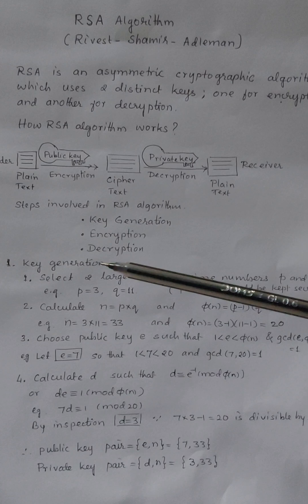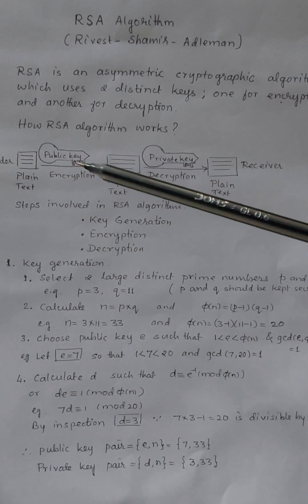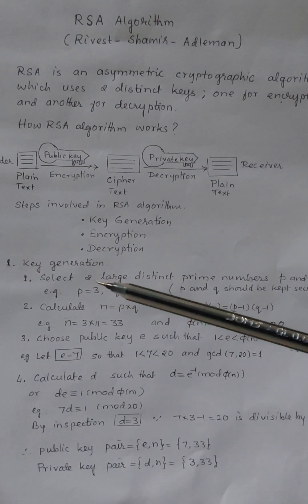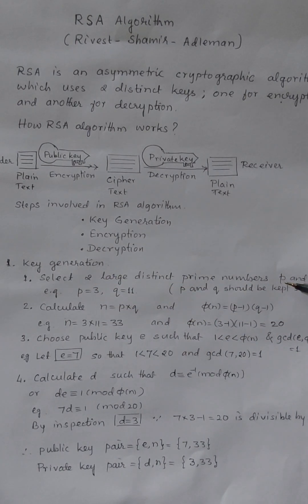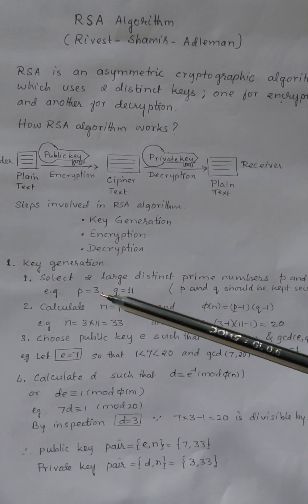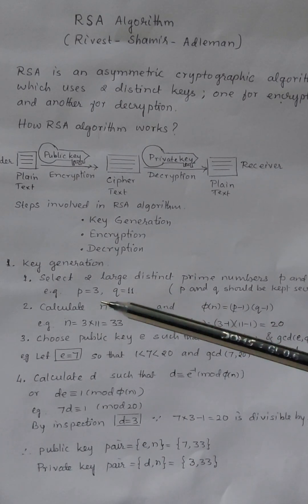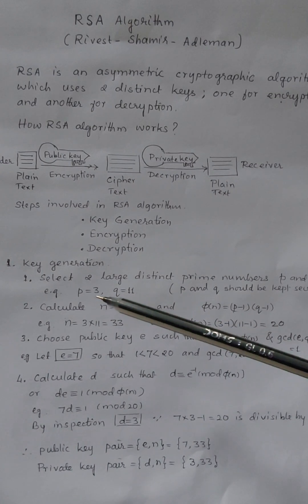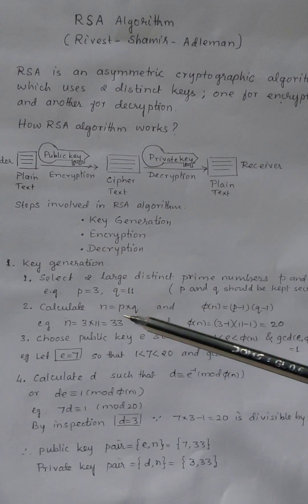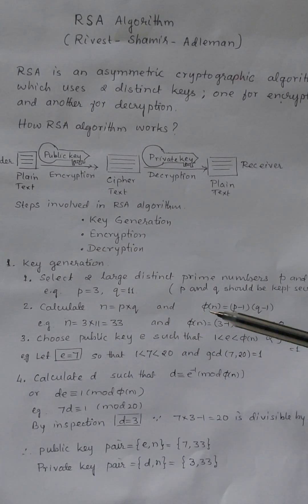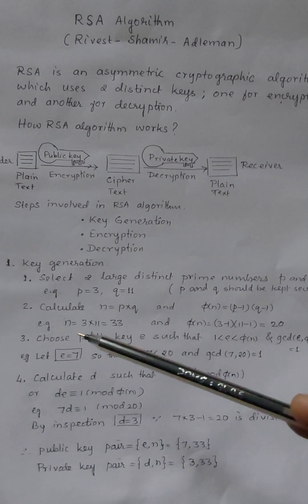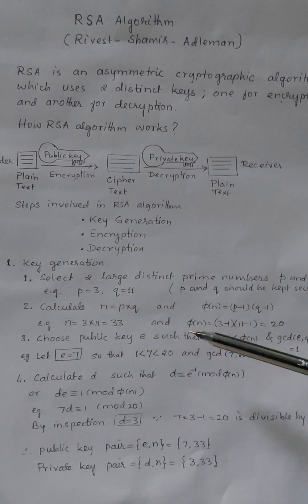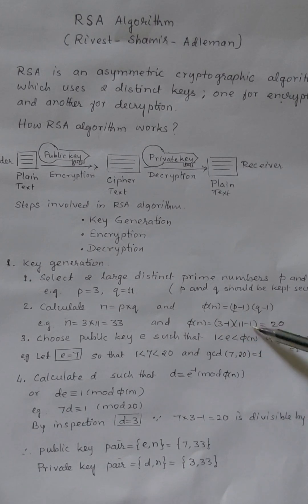To generate the keys, we first choose two large distinct prime numbers p and q, which should be kept secret. Let us take p as 3 and q as 11. In practice we would choose very large numbers, but we're calculating manually here. Next we calculate n = p × q, and phi(n), the Euler's totient function, which equals (p−1)(q−1). So n = 3 × 11 = 33, and phi(n) = 2 × 10 = 20.